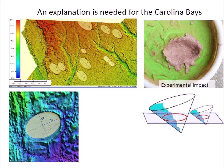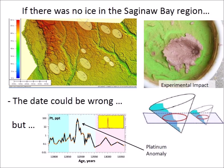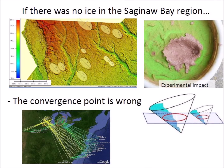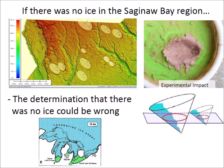When Michigan was covered by the Laurentide Ice Sheet, impacts of ejected ice pieces could have created inclined conical cavities that today look like ellipses. However, if there was no ice in the Saginaw Bay region 12,900 years ago to create the Carolina Bays, the date of the extraterrestrial impact could be wrong. But this is not likely because a platinum anomaly characteristic of an extraterrestrial impact has been reliably dated at 12,900 years ago. If there was no ice in the Saginaw Bay region, another possibility is that the calculation of the convergence point is wrong, and it would be necessary to calculate the convergence point in a region of the Great Lakes that still had ice 12,900 years ago. Finally, it is possible that the determination that there was no ice in Saginaw Bay 12,900 years ago is itself wrong.